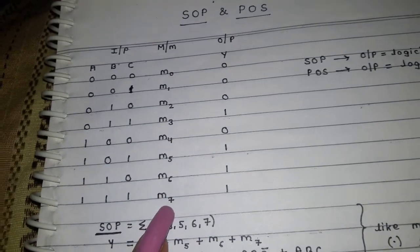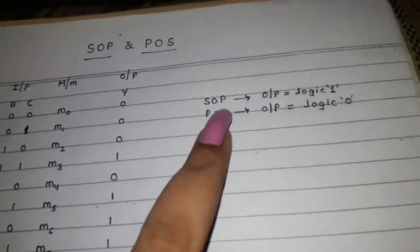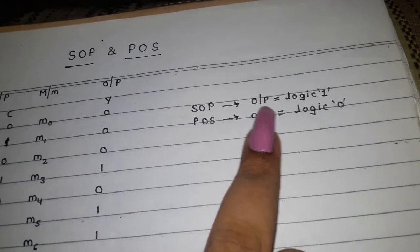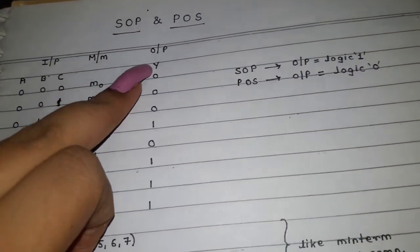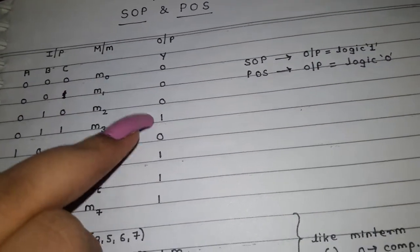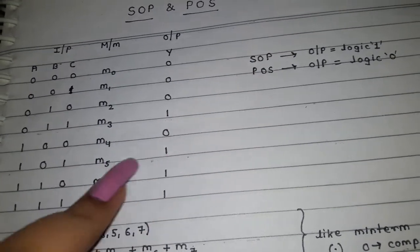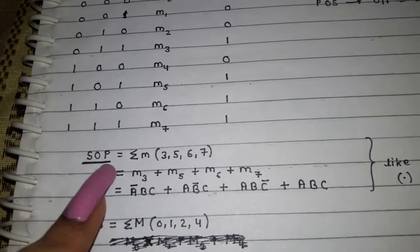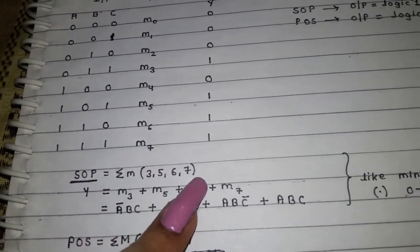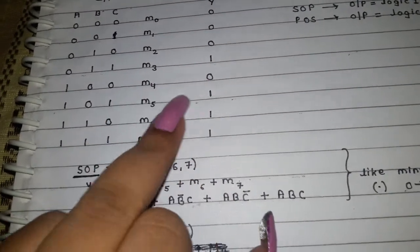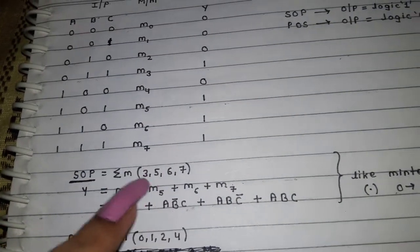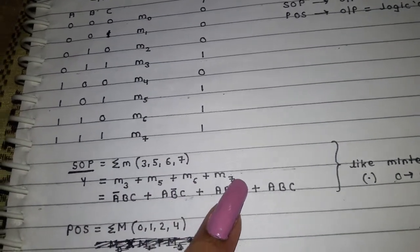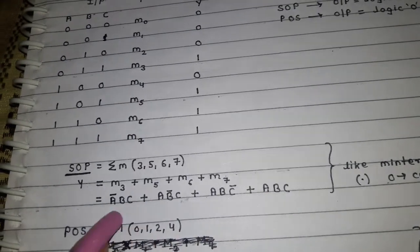For writing SOP, which is Sum of Products, we take that output into consideration whose logic is one — the output which has logic as one. Here you can see ones at M3, M5, M6, and M7. So your SOP would be M(3, 5, 6, 7), and you write: Y equals M3 plus M5 plus M6 plus M7.